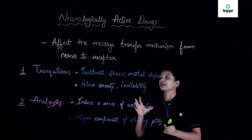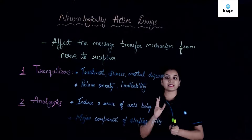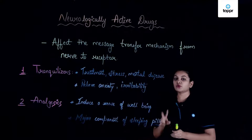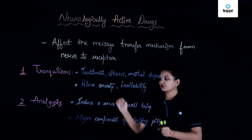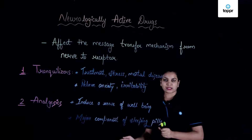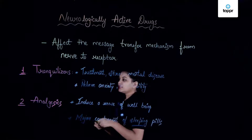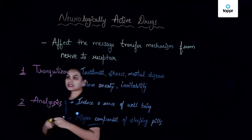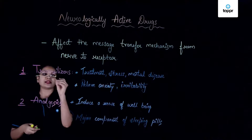These neurologically active drugs are divided into two main categories: the tranquilizers and the analgesics. In this lesson, we will first learn about the tranquilizers.